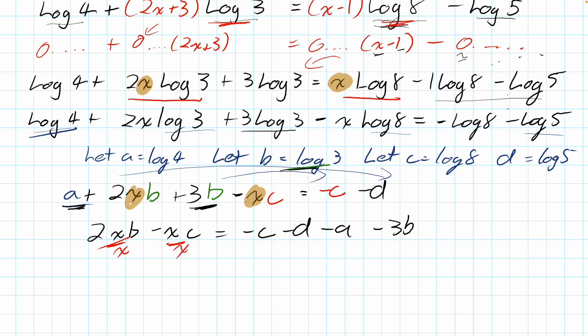So, we get x. And then when we common factor, these ones essentially cancel. We have 2b. And over here, this becomes minus c when we factor out. So, now x is by itself. We still have minus c, minus d, minus a, minus 3b. Who knows what the heck those are equal to? Again, the goal is to get x by itself. So, I can divide everything by 2b minus c.